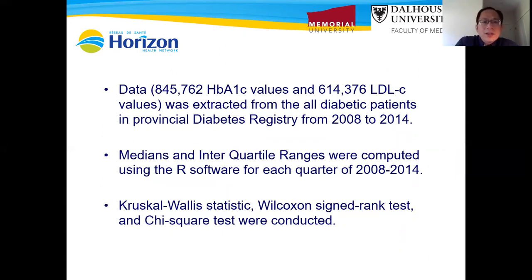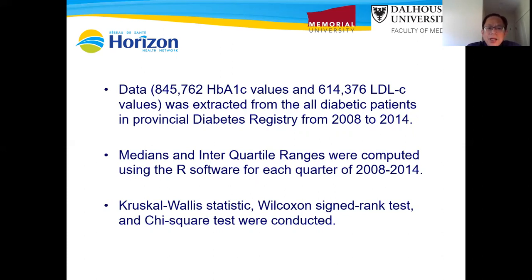The aim of this study was to evaluate the clinical outcomes of population glycemic control and cardiovascular risk levels before and after the implementation of EAG in zone 1.1, and to compare the overall outcome of this zone with the seven other RHA zones that did not implement EAG. We extracted data from the provincial diabetic registry from 2008 to 2014 — about 0.8 million A1C data points and about 0.6 million LDL cholesterol values. Because the data did not follow a Gaussian distribution, we extracted the median and interquartile ranges and used the Kruskal-Wallis test, Wilcoxon signed-rank test, and chi-square test for statistical analysis.